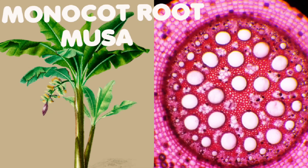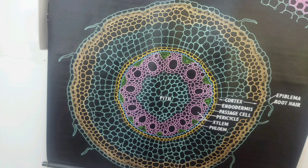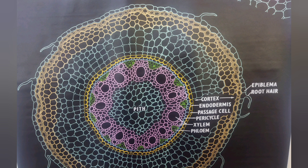First semester B.S.E. practical is the Monocot Root. Monocot Root common features: Epidermis is a single layer, thin wall, colorless, polygonal shape, without intercellular spaces.